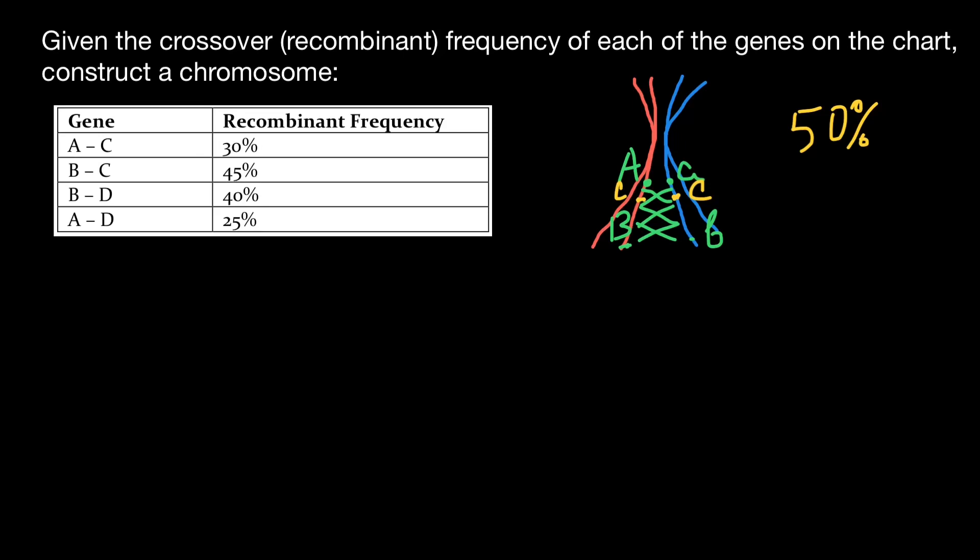Rule number one. We have to find a pair of genes with maximum frequency of the crossing over. And this is genes B and C. As you see, 45%, very close to 50%, which means that genes B and C are very far from each other. This is going to be first step.